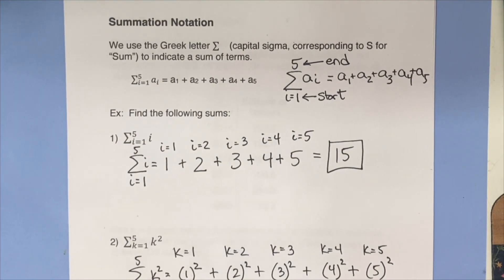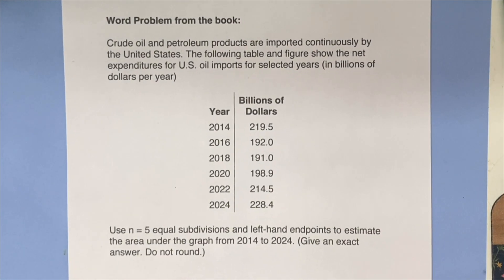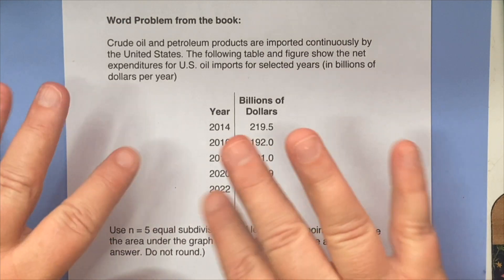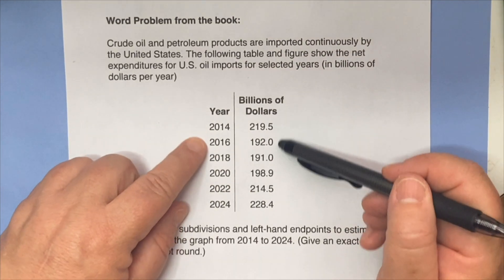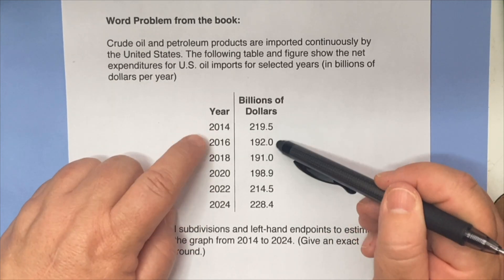Okay. So I hope you have a good snack and your favorite support stuffy or just a happy place to sit in because it's a word problem from the book. Oh no. Okay, we can totally do this. So this is how we're actually going to use the information we have. Crude oil and petroleum products are imported continuously by the United States. So in other words, this is happening all the time. It doesn't stop.